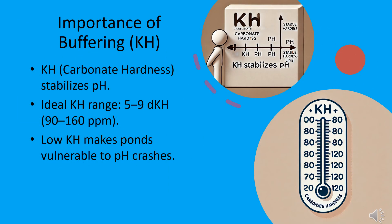Buffering, or KH, plays a critical role in stabilizing your pond's pH. Carbonate hardness, measured in degrees of KH, helps prevent dangerous pH swings. The ideal KH range is 5 to 9 dKH, or 90 to 160 ppm.